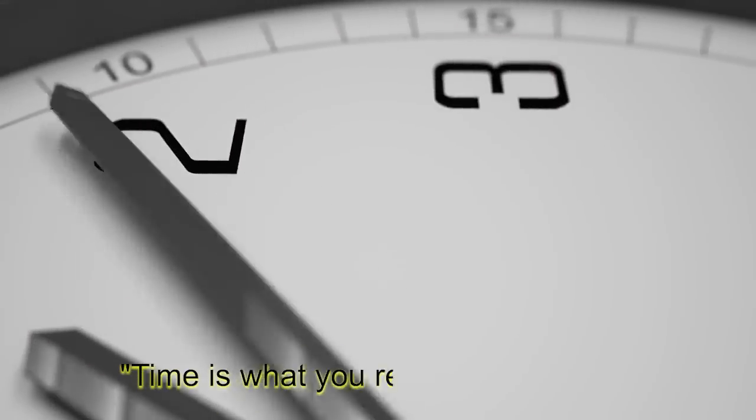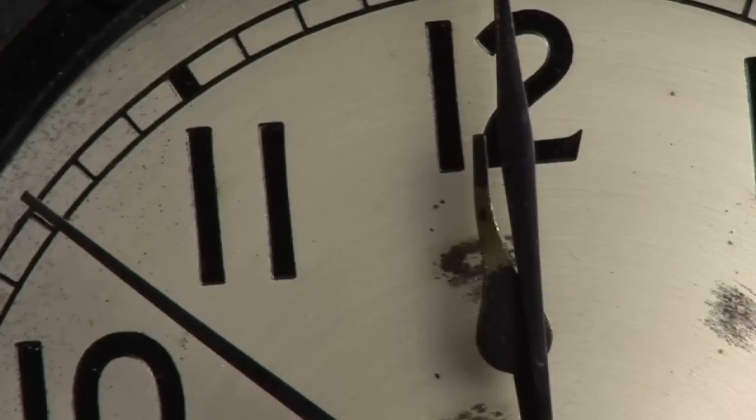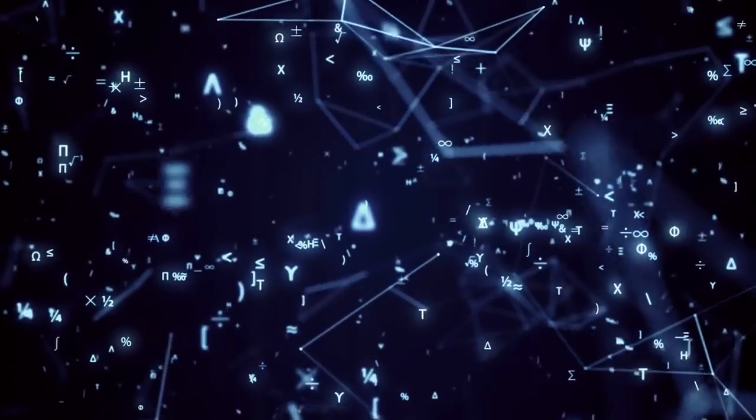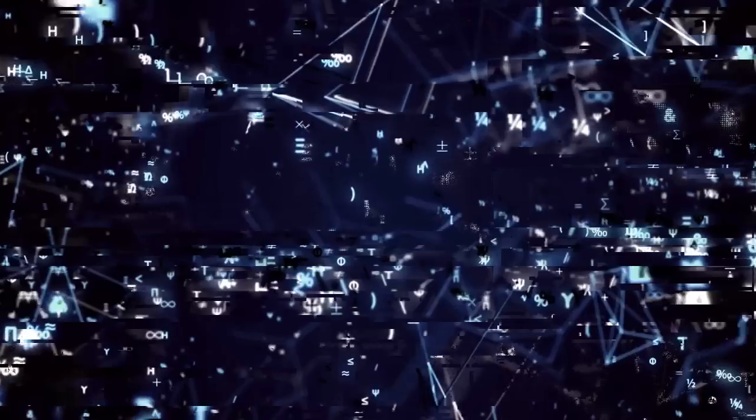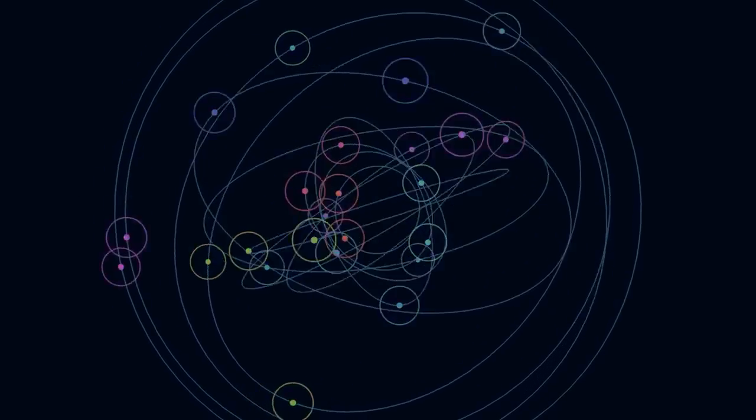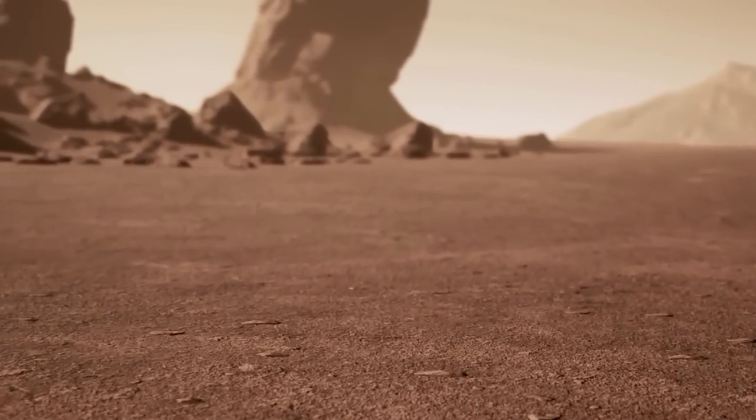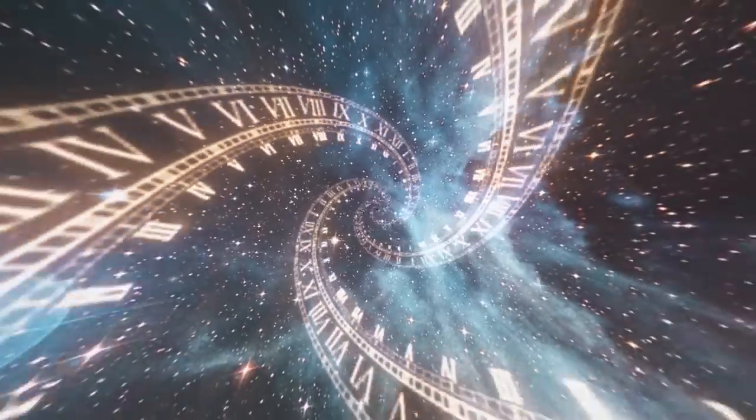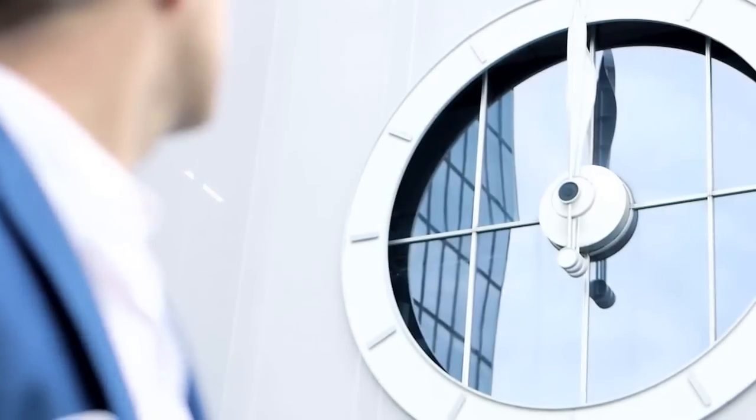The quote from Einstein goes: Time is what you read on the clock. Time was viewed as an immutable, continuous quantity in classical Newtonian physics that was unaffected by motion or location. However, Einstein demonstrated that depending on an observer's relative speed and gravity, time might appear to run differently for them. This indicates that perception is subjective and that time is relative.